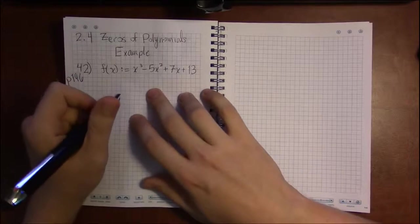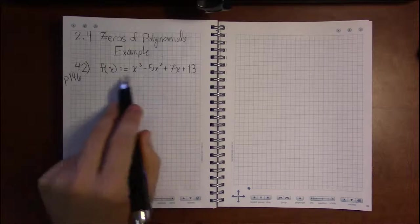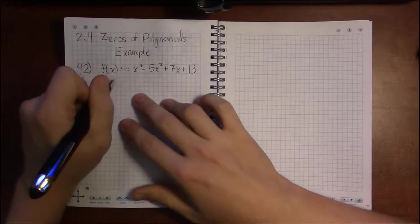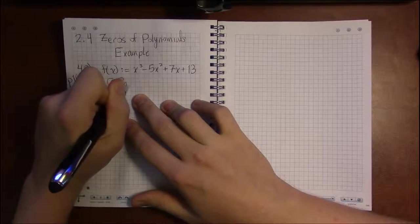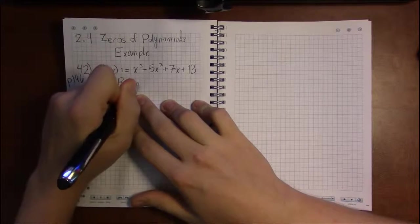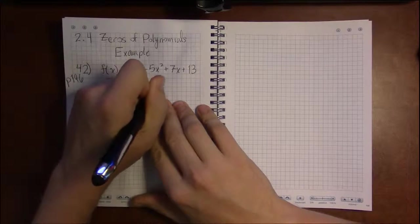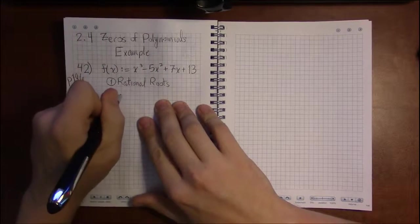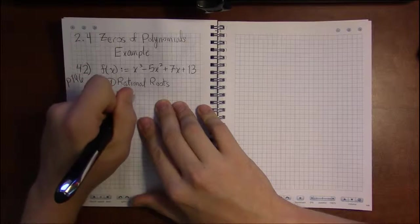Now, we're going to start this pretty much the way we started solving polynomials in the last section, with the rational roots theorem. We're going to look at the factors of the constant term, 13, divided by the factors of the leading coefficient.